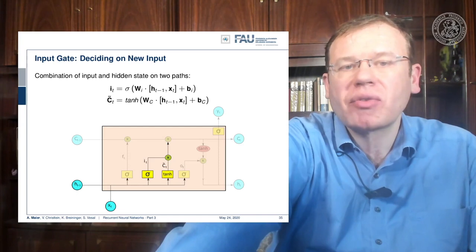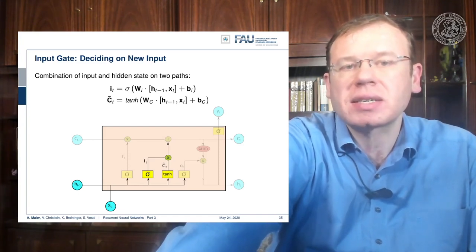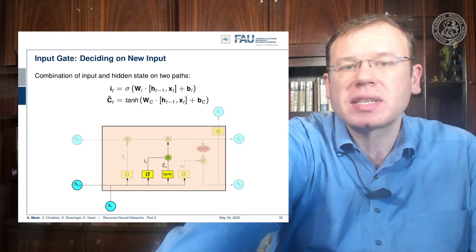So we multiply with IT the new produced CT tilde and add it to the cell state.